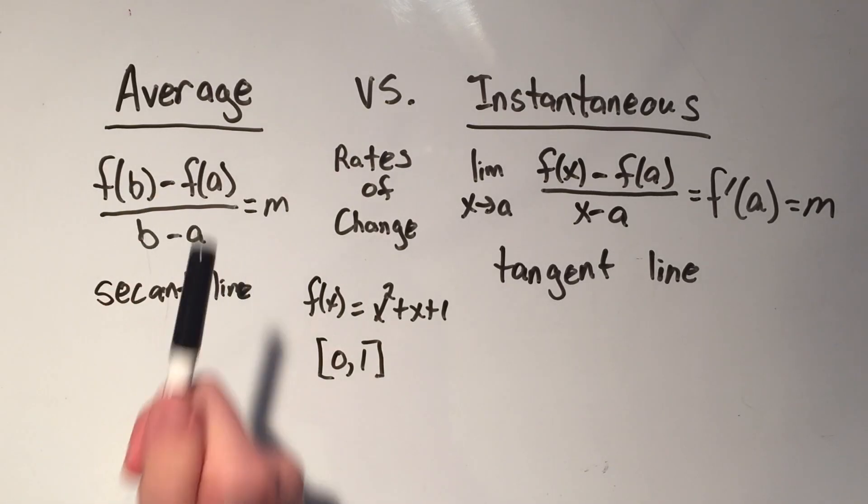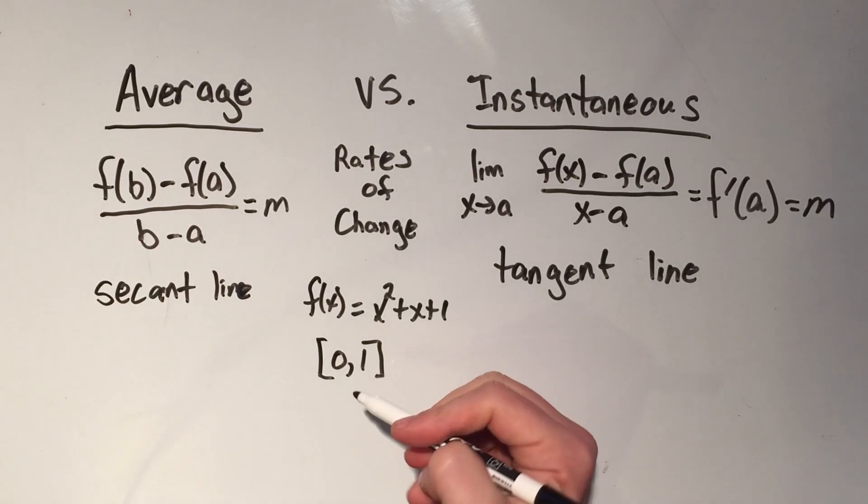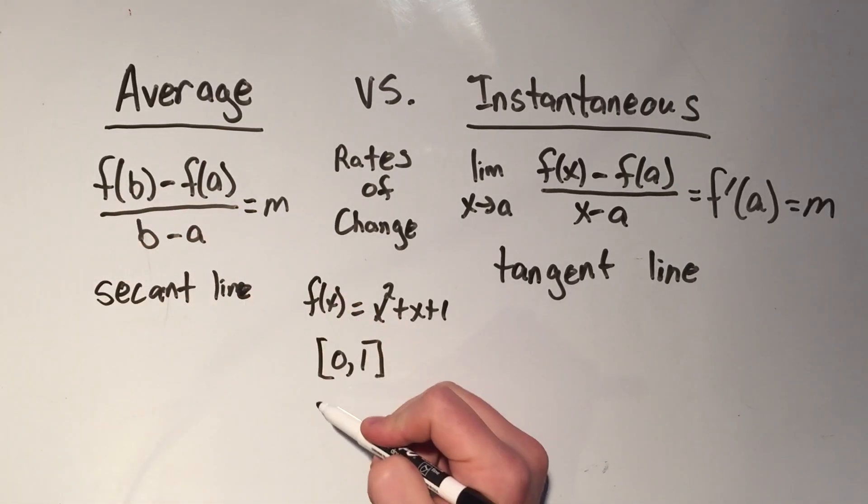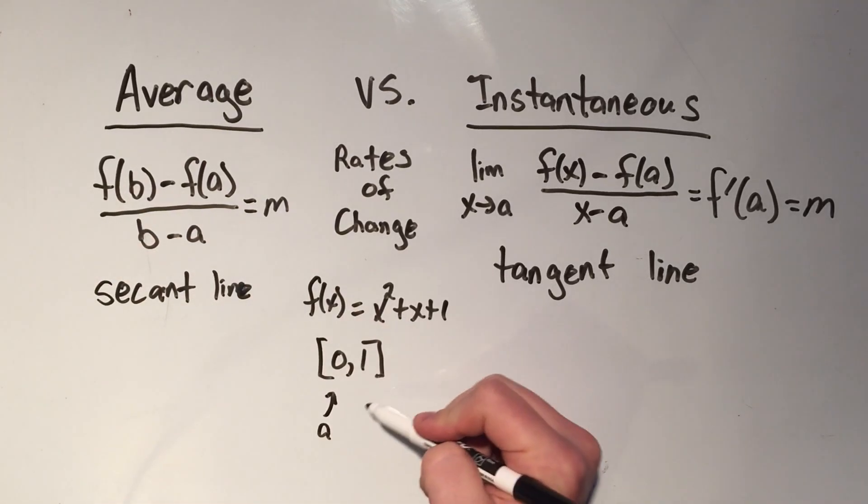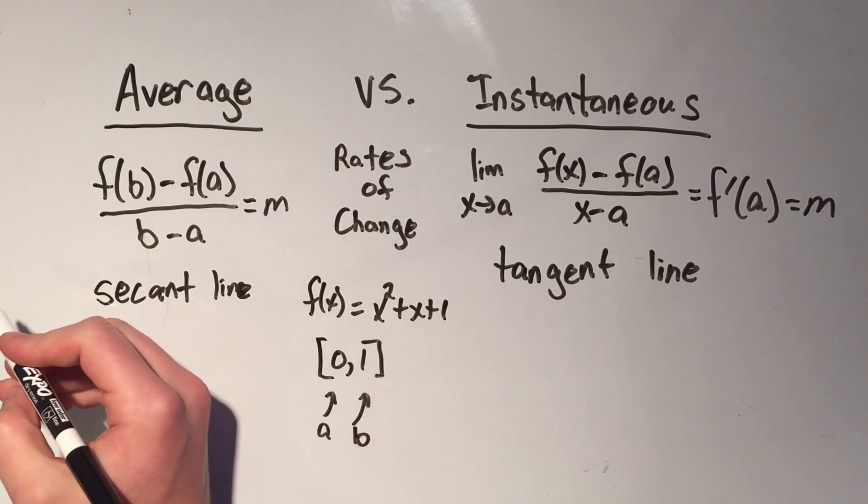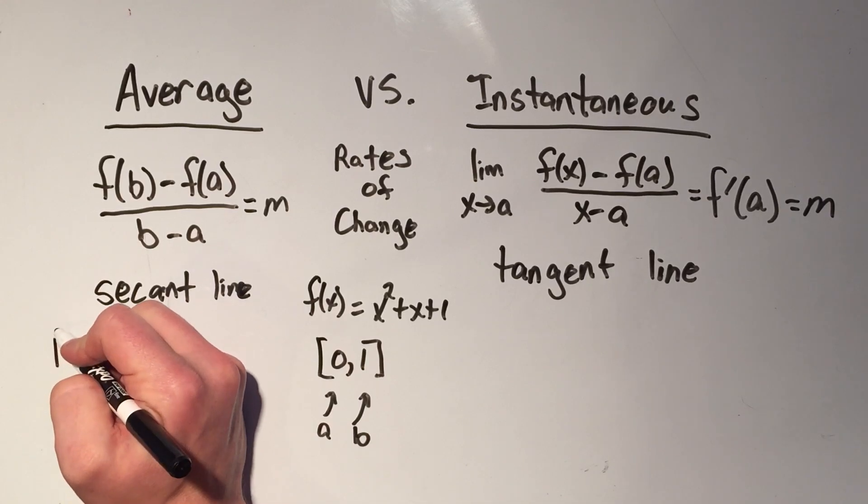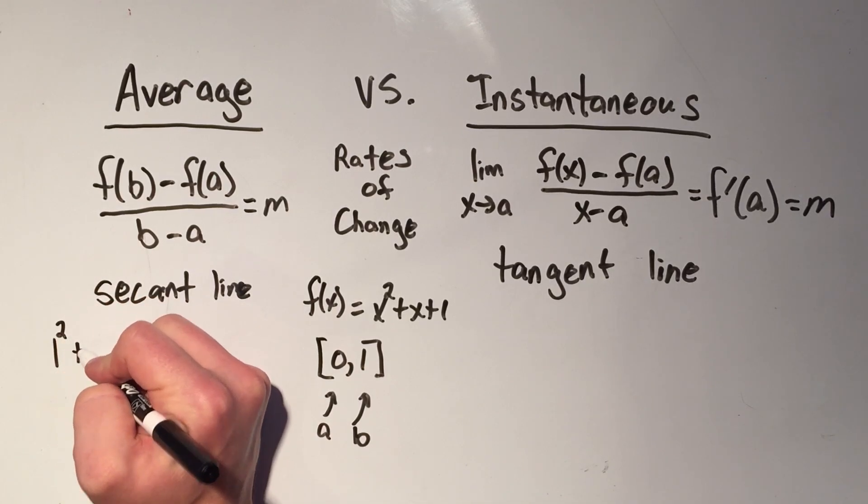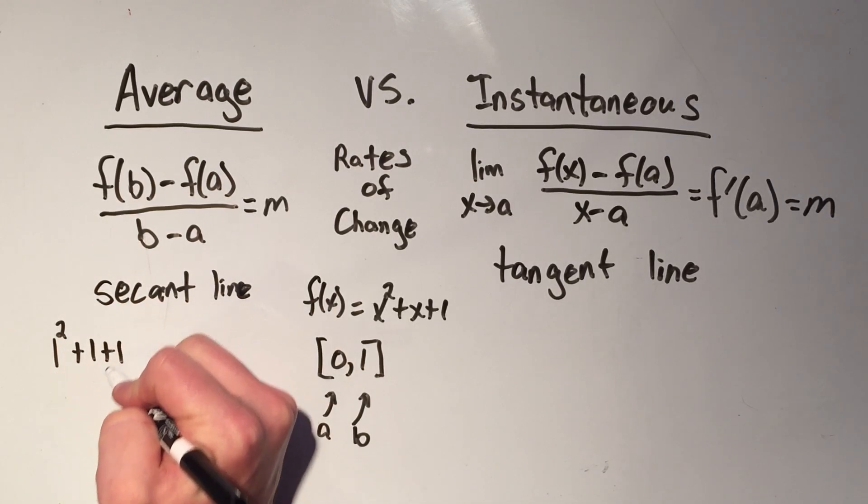Well, if I'm following this formula, my zero is my a, my one is my b on the interval. So it says f of b, that means I plug one into this function, that'll be one squared plus one plus one.